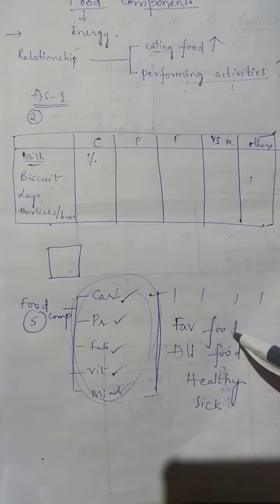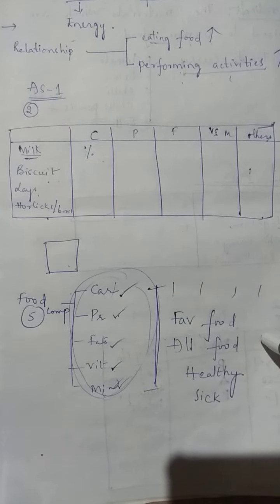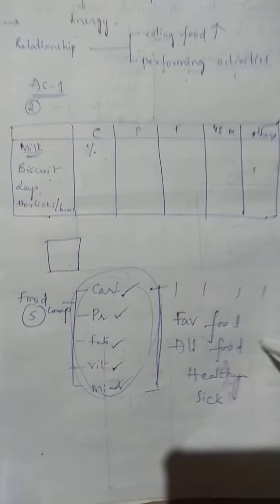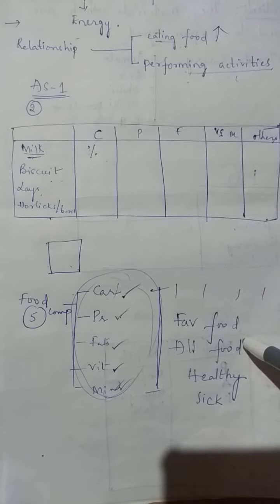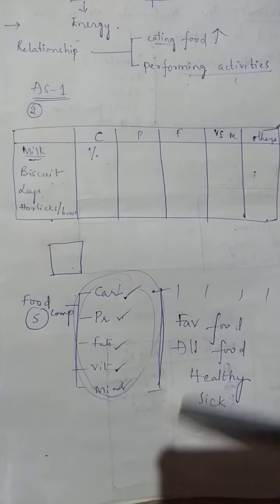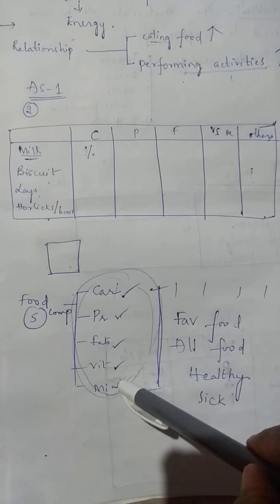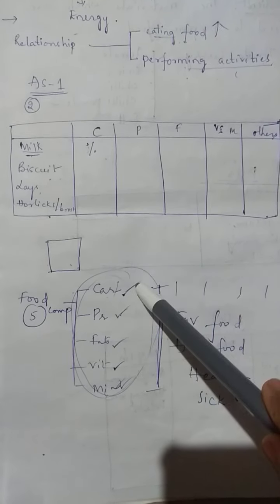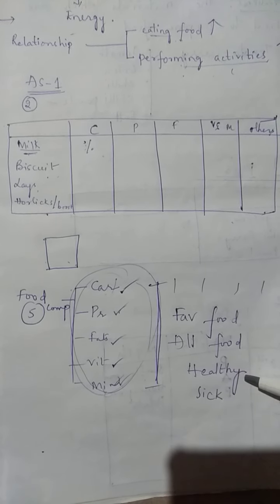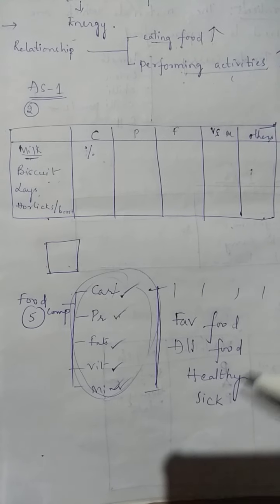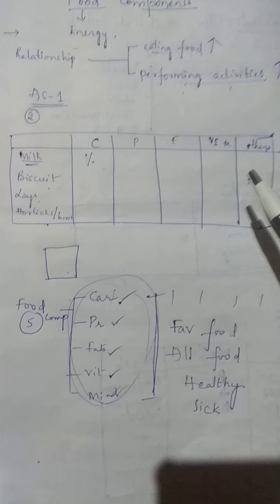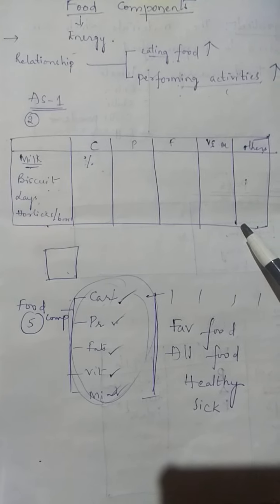That's why you need to eat all foods - all vegetables, all fruits, all dry fruits. Everything you have to eat. If you are eating everything, you will be getting all these. Otherwise, you will be deficient in one or two. And if you are eating all vegetables and food, then you will become healthy and you will never fall sick. Complete this assignment and send me on WhatsApp. Thank you.